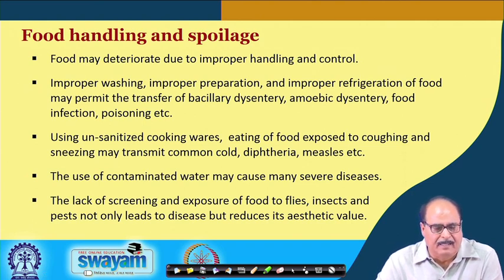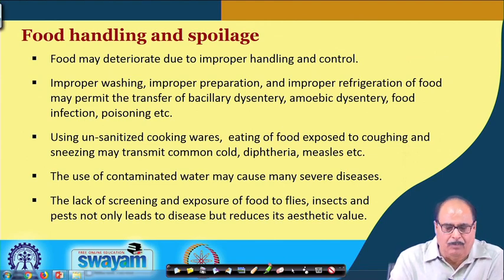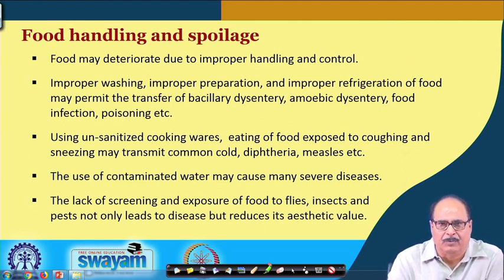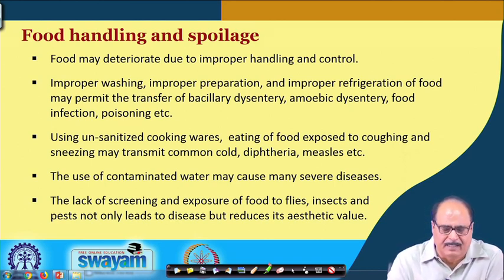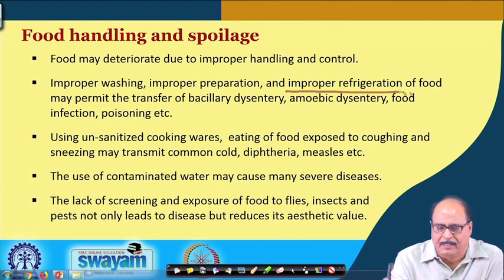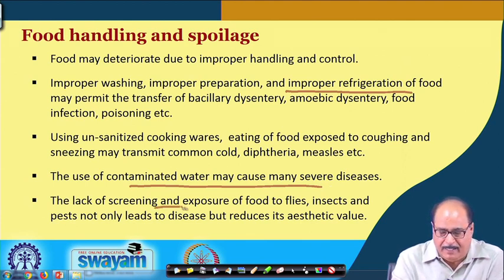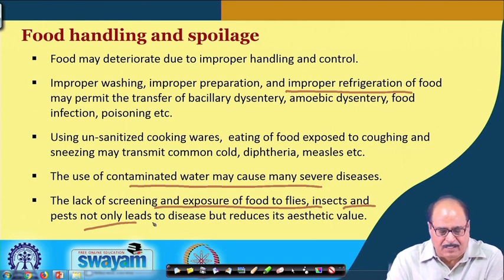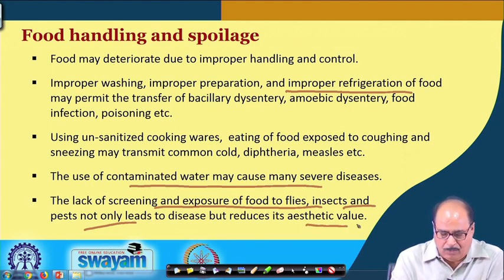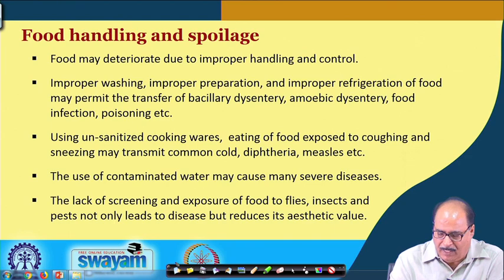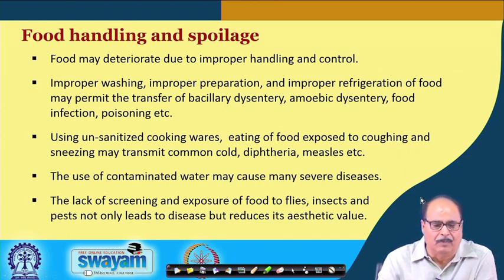Various conditions may result in contamination of food. Even how food is handled, environmental pollution, handling equipment, and processing machines can be sources. Improper washing, improper preparation, improper refrigeration, use of contaminated water, and lack of screening — leading to exposure of food to flies, insects, and pests — may all result in contamination. This not only leads to diseases but also reduces the aesthetic values of food. Proper care should be taken to eliminate these sources of contamination.